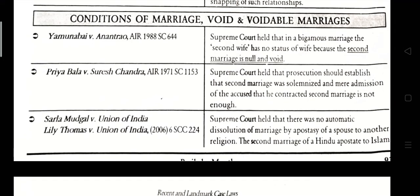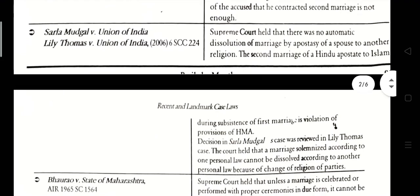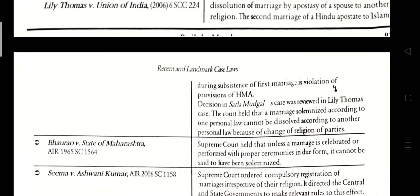Salla Mugdal vs. Union of India and Lily Thomas vs. Union of India, 2006. The Supreme Court held that there was no automatic dissolution of marriage by apostasy of the spouse to another religion. The second marriage of a Hindu apostate to Islam during the subsistence of the first marriage is in violation of the provisions of the Hindu Marriage Act. The decision in Salla Mugdal case was reviewed in the Lily Thomas case.